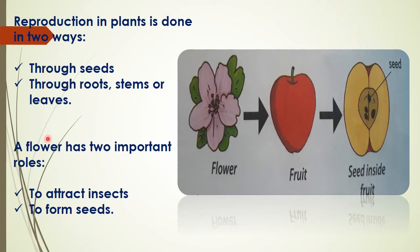A flower is the most attractive part of a plant. It has two important roles: first, to attract insects that help in pollination, and also to form seeds that will grow into new plants.